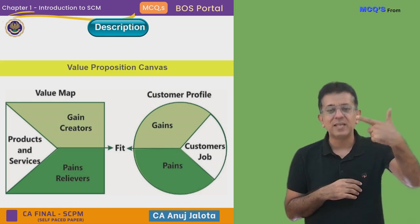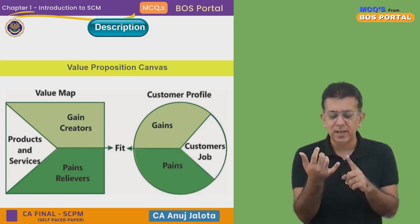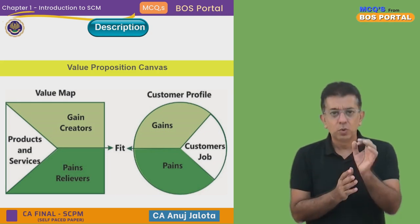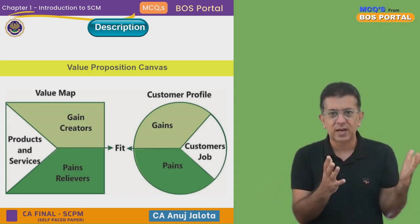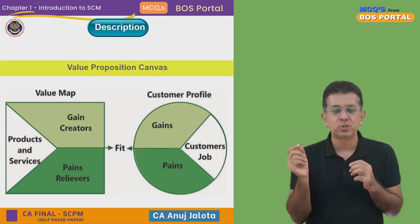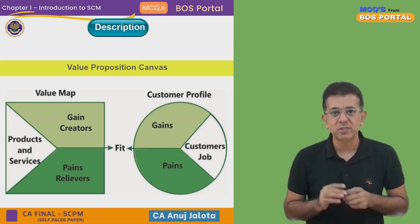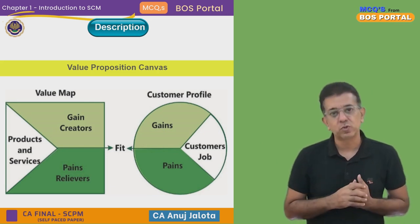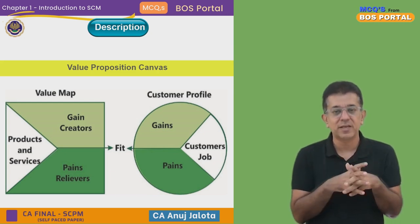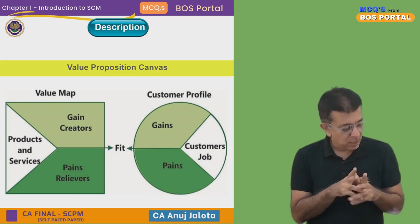Do remember: pain relievers and gain creators are two different things, although sometimes one feature itself can give you both — it can help relieve the pain and also give gains. For example, Byju's: kids are not studying, so Byju's value proposition was to make studies more interactive with videos and so on. It relieves the pain of parents by making kids study, and there are certain gains too — like the Parents Connect app where parents can review how their kids are doing.